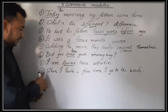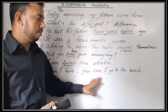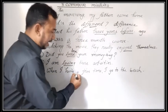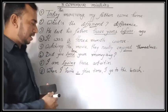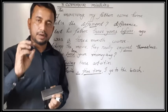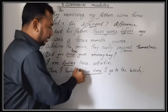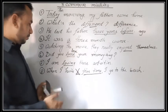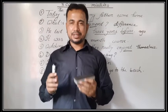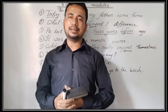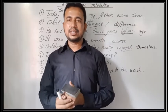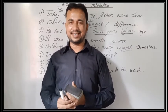Look at the last sentence: 'When I have a free time, I go to the beach.' What's wrong with that? 'Free time' is an uncountable noun, so the article 'a' is not allowed. It will be 'When I have free time, I go to the beach.' I hope you all have understood. Please leave a comment on how the class was for you. See you again in the next class, inshallah. Bye bye!